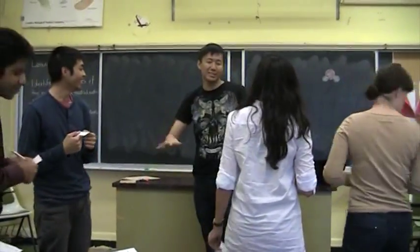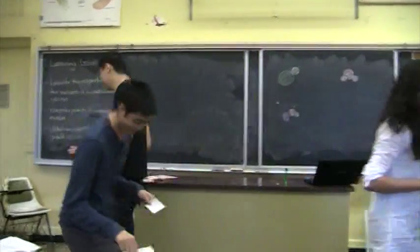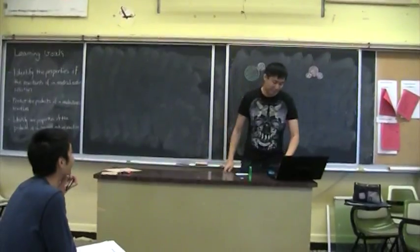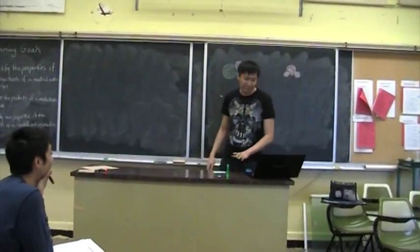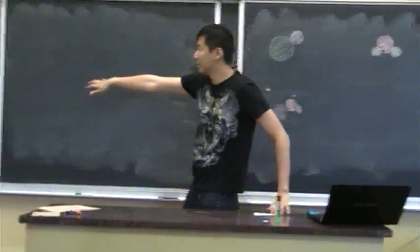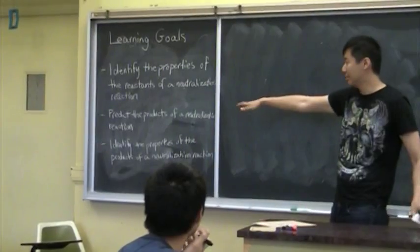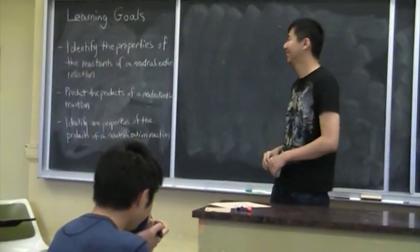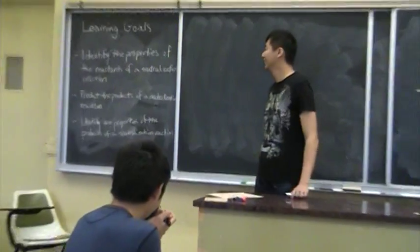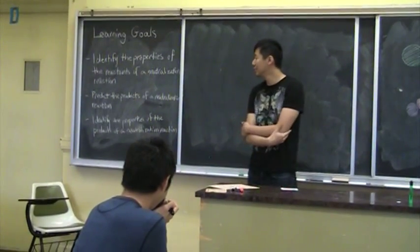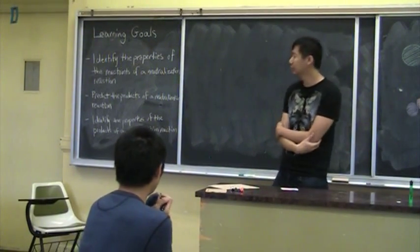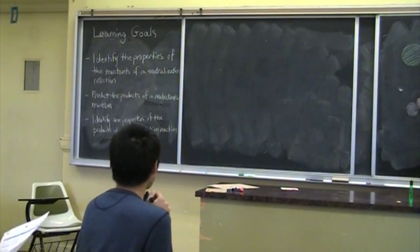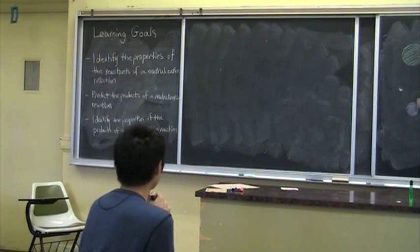Everyone return to their seats. You can leave the card on your table for now. We're going to continue with our lesson on neutralization. Here are the learning goals. [Student reads:] Identify the properties of the reactants of the neutralization reaction. Predict the products of the neutralization reaction. And identify the properties of the products of the neutralization reaction.